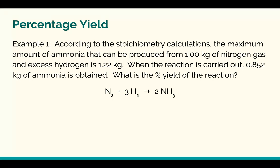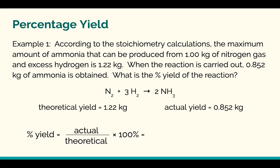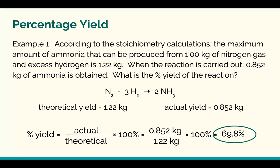So we're going to calculate the percent yield. We have to figure out which number is which. We've got 1 kilogram of nitrogen gas possibly producing 1.22 kilograms — so that's your theoretical yield. And when the reaction is carried out, 0.852 kilograms of ammonia is obtained — so that's your actual yield. The 1 kilogram of nitrogen gas isn't relevant to this calculation. So we take the actual yield, divide by the theoretical yield, times by 100%, and you get 69.8%.